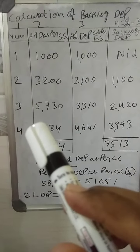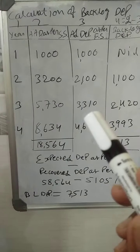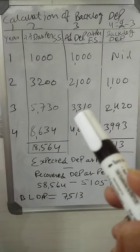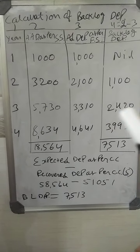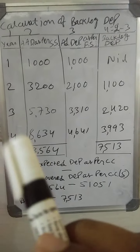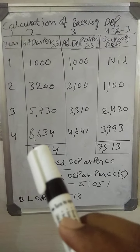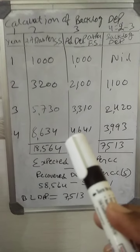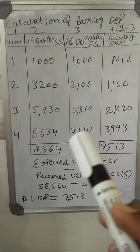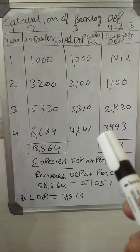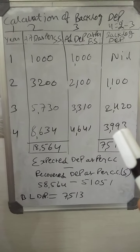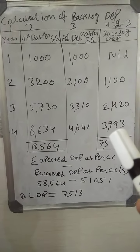For the third year: 5,730 minus 3,310 gives 2,420. For the fourth year: 8,634 minus 4,641 gives 3,993.